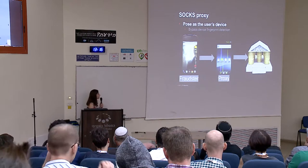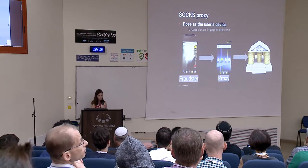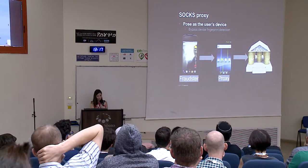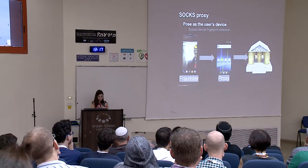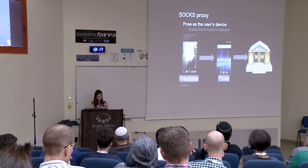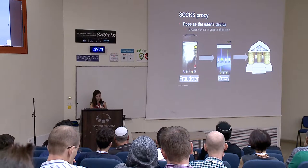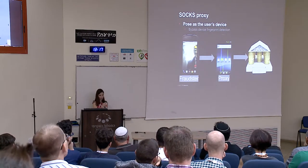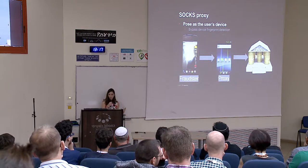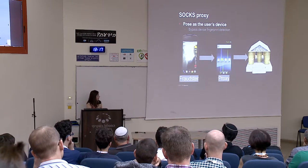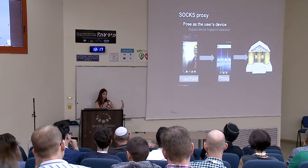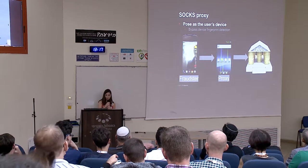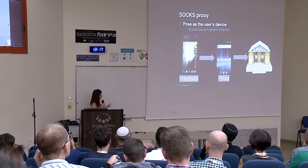Another attack vector is the SOCKS proxy. After stealing the user's banking credentials, the fraudster still needs to bypass the bank's server-side protections. Some security vendors track user devices via fingerprinting — a unique signature per device. If the fraudster tries to commit a transaction from their own device, it gets flagged as suspicious. So fraudsters use the user's device as a network proxy: traffic from the fraudster's device goes through the victim's device before reaching the bank's server, tricking the bank into thinking it's legitimate traffic.